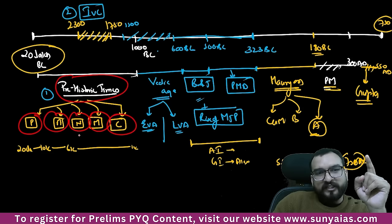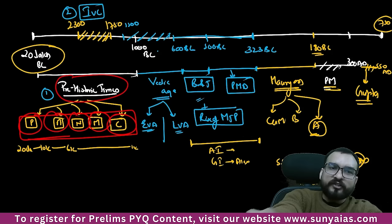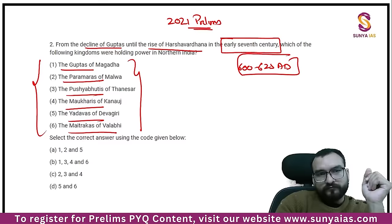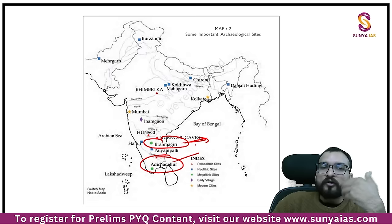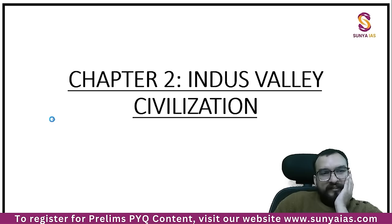This is the only question asked from the topic of prehistoric times. In prehistoric times when you are reading, focus on Paleolithic, Mesolithic, Neolithic, Megalithic, and Chalcolithic sites — every site should be fixed. Two Megalithic sites mentioned in NCERT are Brahmagiri and Adichanallur. Now let us go to the Indus Valley Civilization.